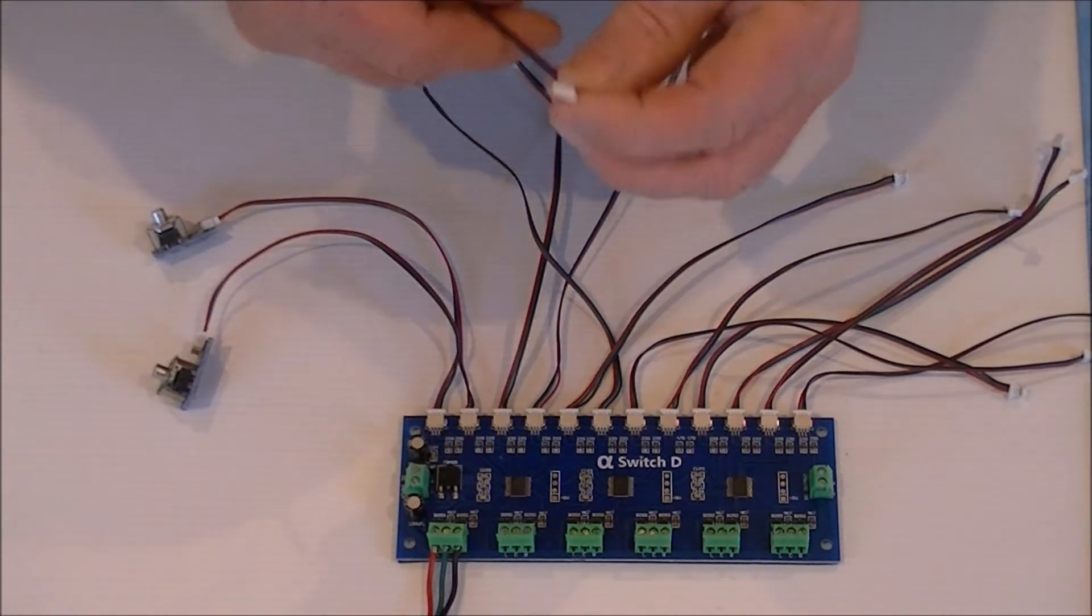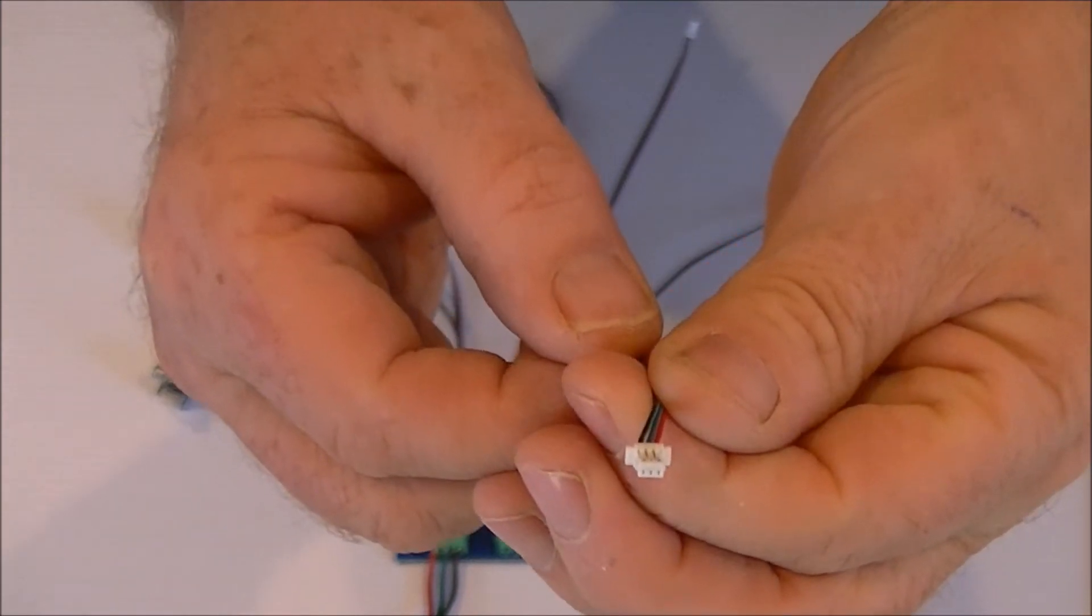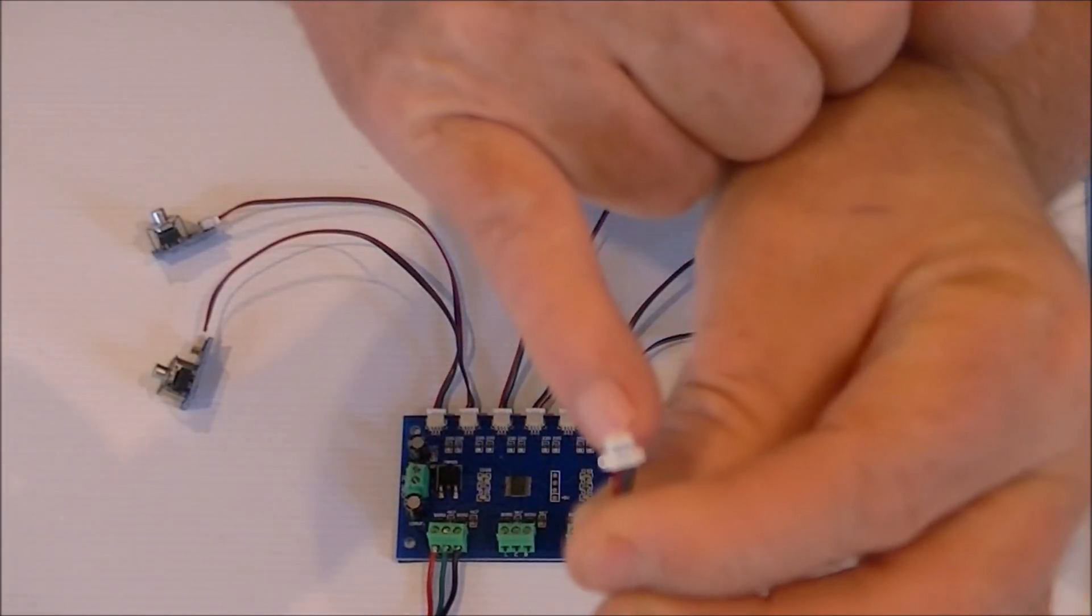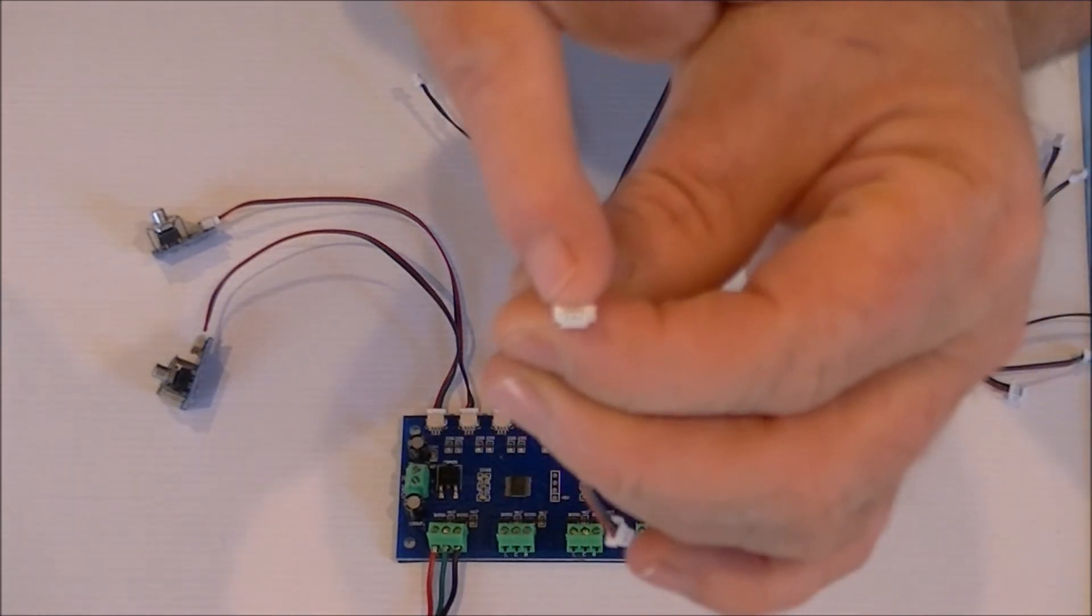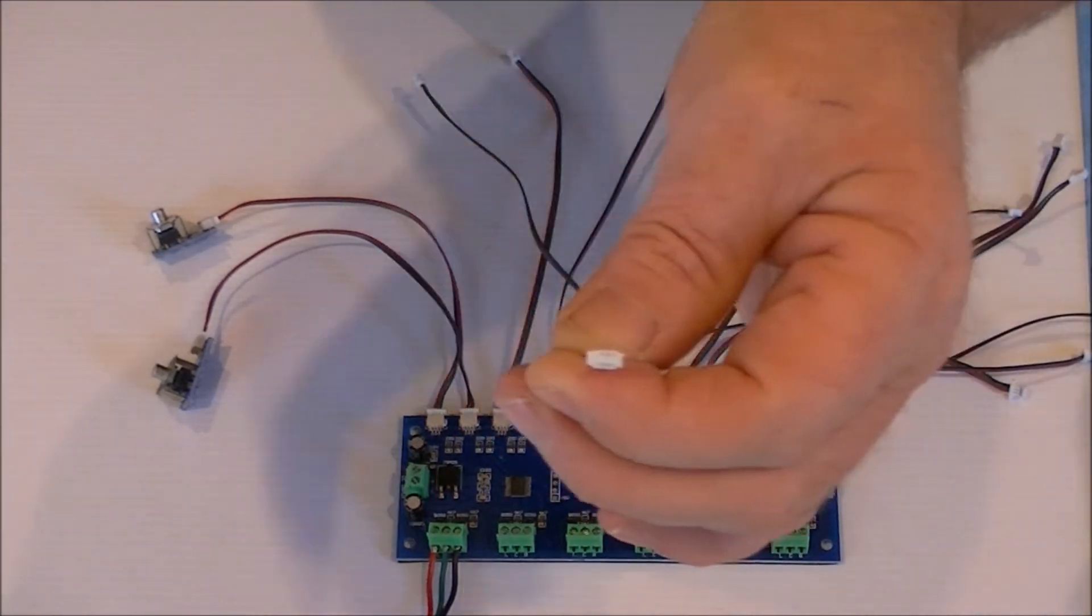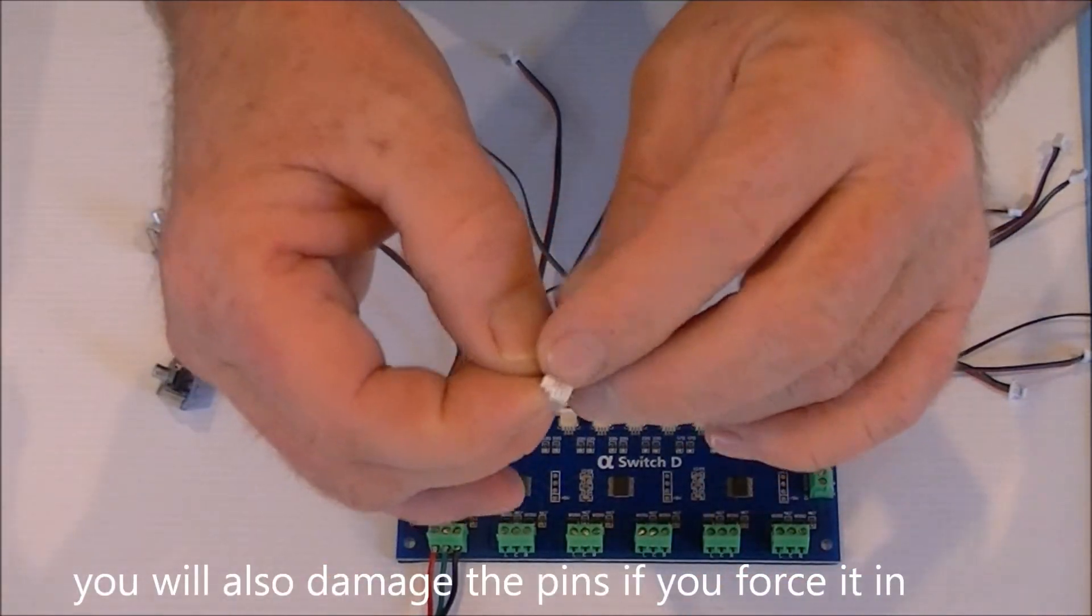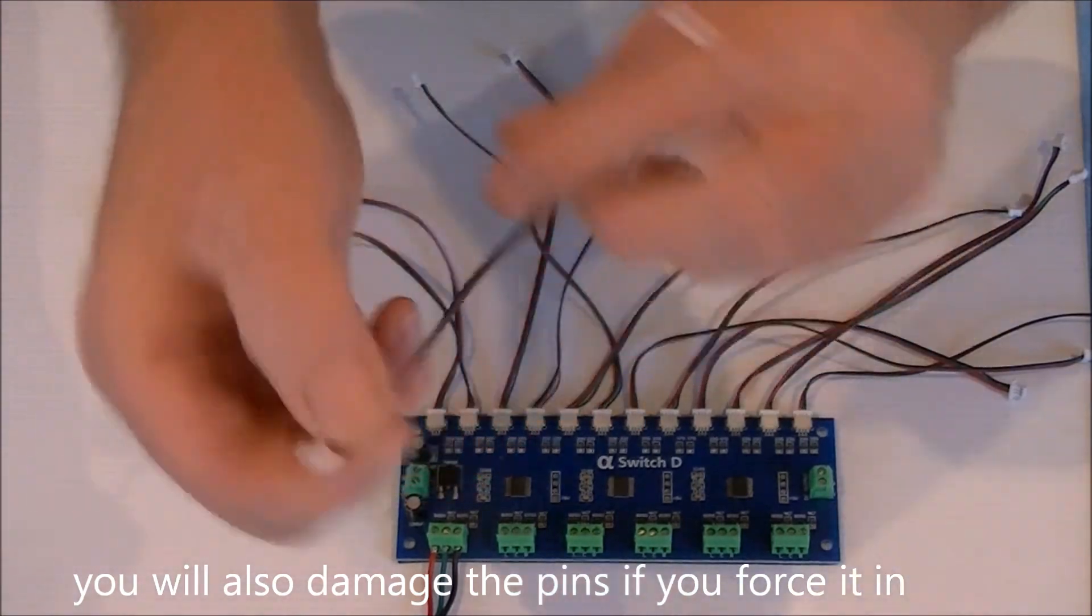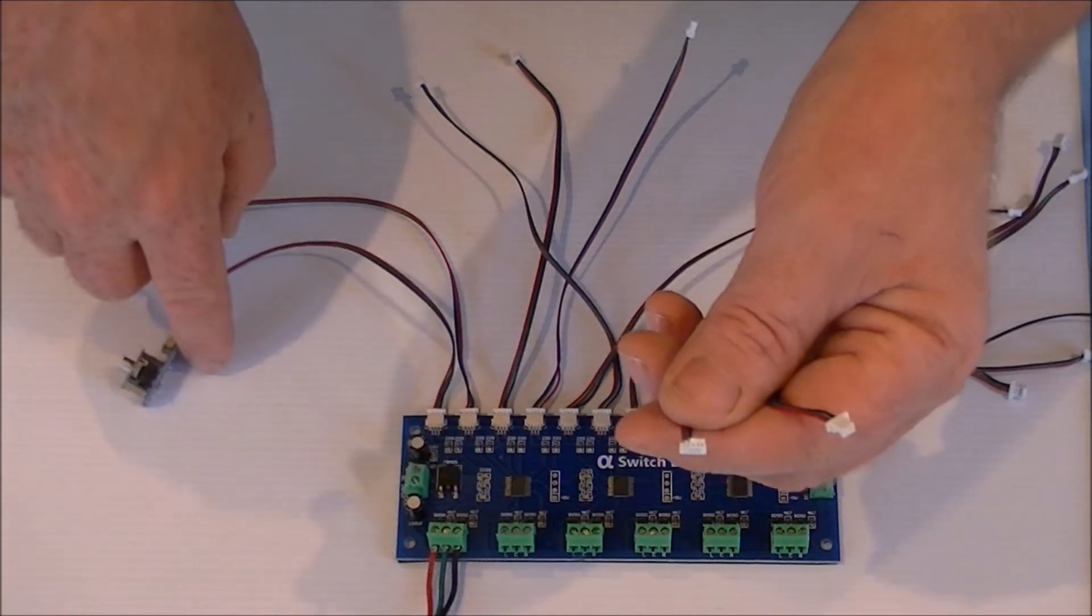So the signal from the switch goes down to this input here. This is again, it's a plug and play. What you have to remember, I can show you on here if it will focus, there is only one way in that these plugs should go because the pins aren't central. They're offset to one side. I don't think it's going to pick it up there. So what that means is that if you put it in upside down, your system's not going to work. So make sure you've orientated these right.